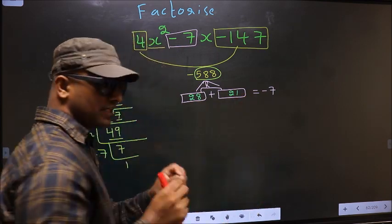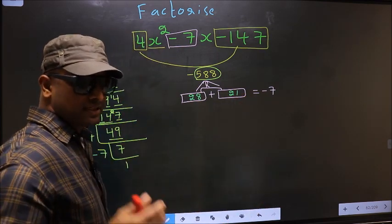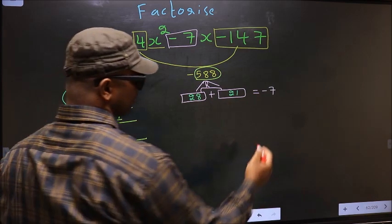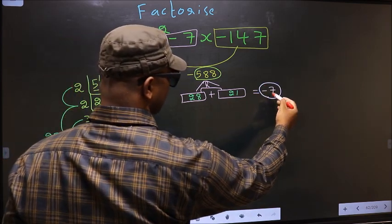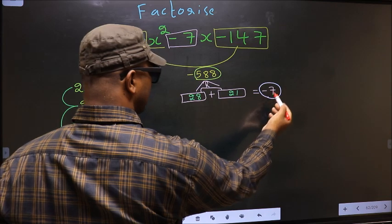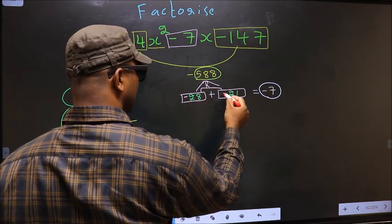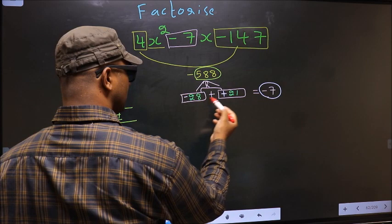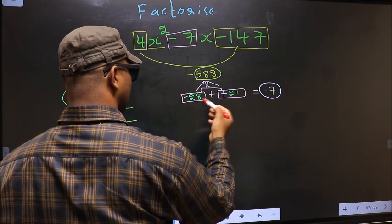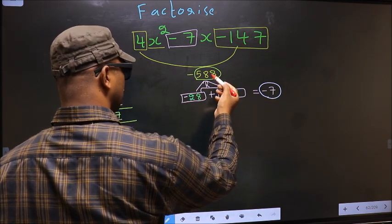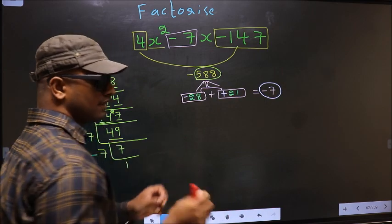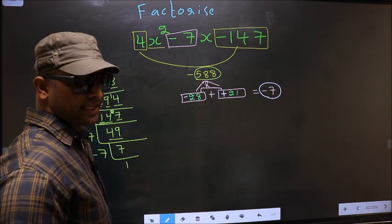Now we should adjust the signs. What I mean is, over here we have -7. To get -7, we should place negative here and positive here. -28 + 21 = -7. -28 × +21 = -588. So we have adjusted the signs.